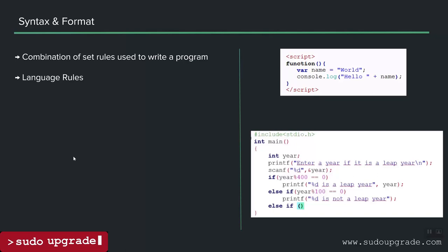Just like in any language — in English you write sentences from left to right, in Arabic from right to left — each language has its specific syntax and format. Similarly, computer programs have their own syntax and format, which you can think of as language rules: a combination of rules used to write a program. For example, in JavaScript we're declaring a variable and printing to the console; in C we're calling a library, writing a function, and doing a particular task.